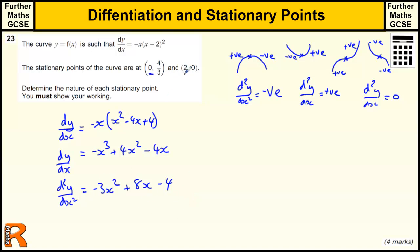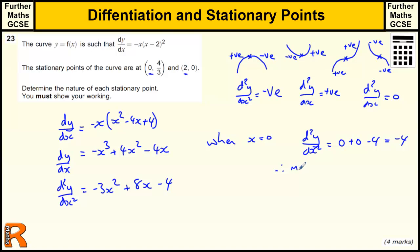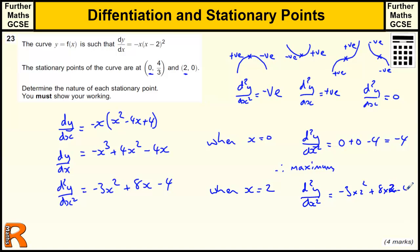Now we plug in the values x = 0 and x = 2. When x = 0, d²y/dx² = 0 + 0 minus 4 = minus 4. Since it's negative, this is a maximum. When x = 2, d²y/dx² = minus 3(4) + 8(2) minus 4 = minus 12 + 16 minus 4 = 0. Therefore, that point is a point of inflection.